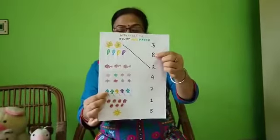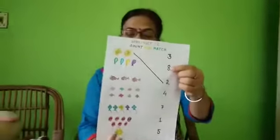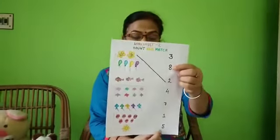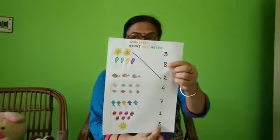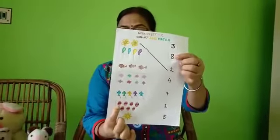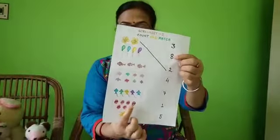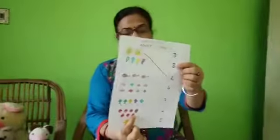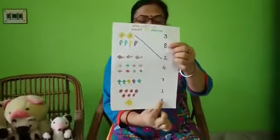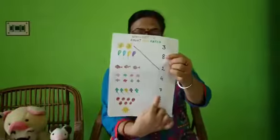Next, kites. One, two, three, four, five. How many kites are here? Five. Where is five? Five is here. Next, balls. One, two, three, four, five, six, seven. Seven balls are here. Where is seven? Seven is here. Then we will match.